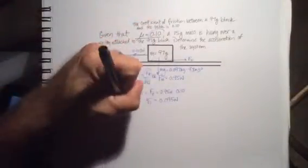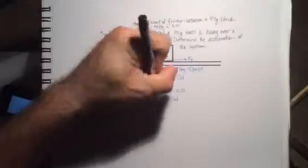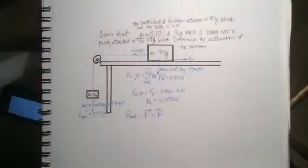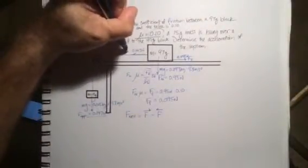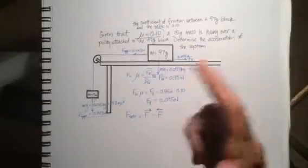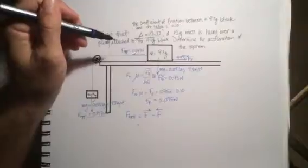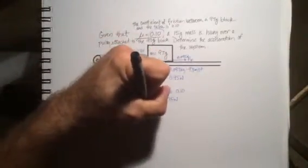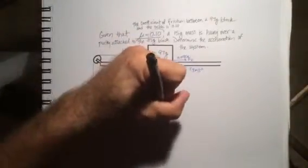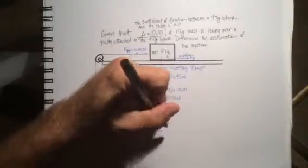Now we consider the net force horizontally, since this is ultimately a horizontal event. Net force equals force right minus force left. The friction force is 0.095 newtons and the applied force is 0.147 newtons. Since the applied force is bigger, it's pulling to the left, so right force 0.095 minus left force 0.147 equals negative 0.052 newtons.